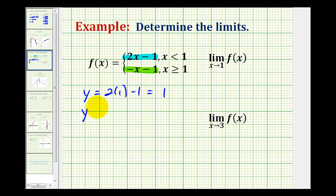And then for the second line, we'd have negative 1 minus 1, which is equal to negative 2. So as we approach positive 1, notice how these two lines are approaching two different function values. Therefore, this limit does not exist.